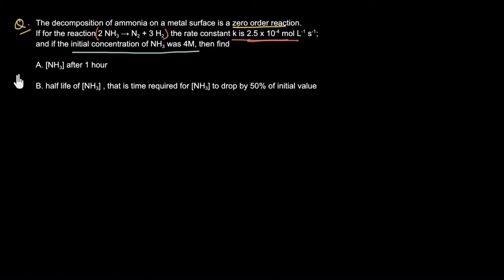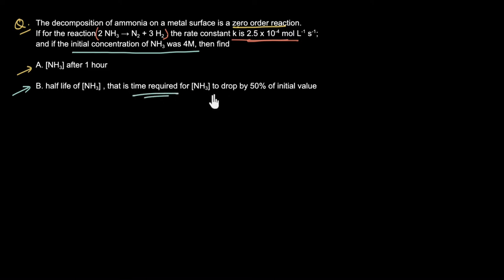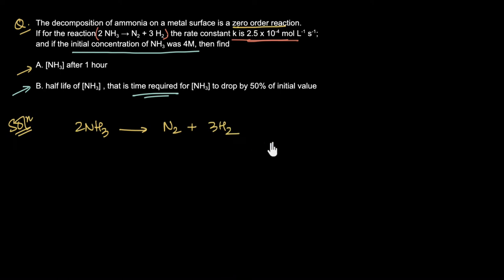We need to find: (a) the concentration of ammonia after 1 hour, and (b) the half-life of ammonia, that is the time required for ammonia to drop by 50% of its initial value. Let me write the equation: 2NH₃ → N₂ + 3H₂. This is a zero-order reaction.